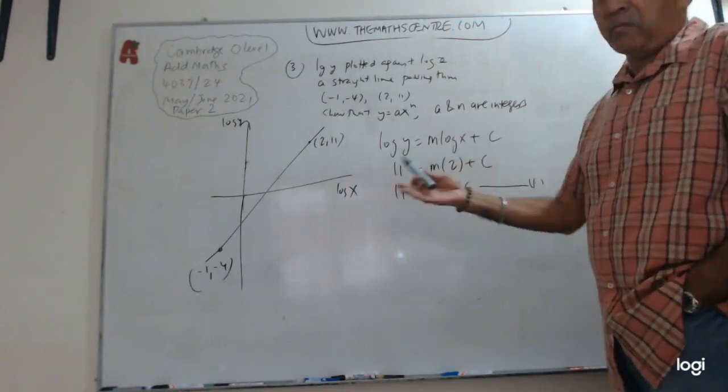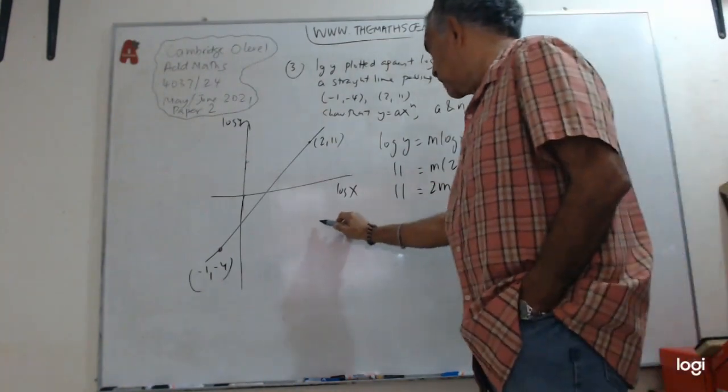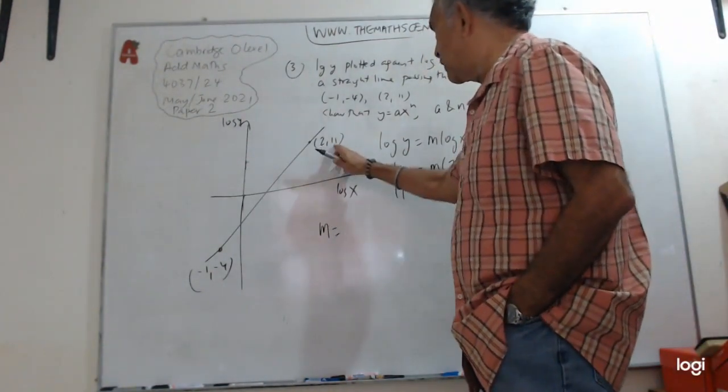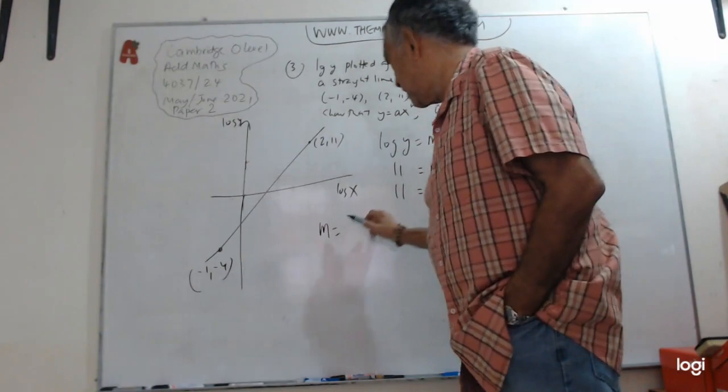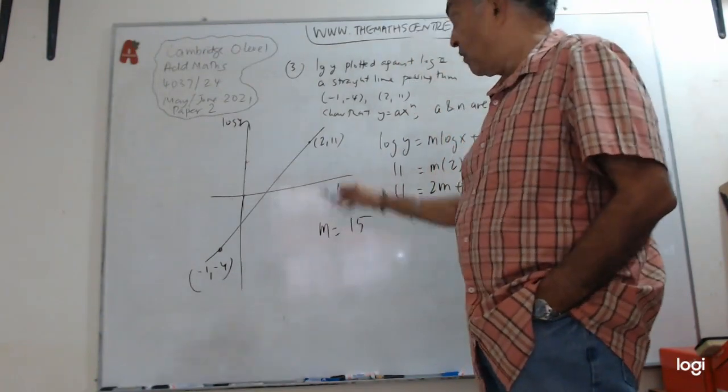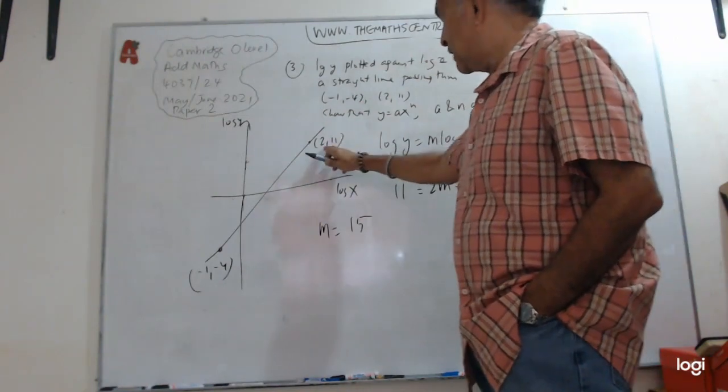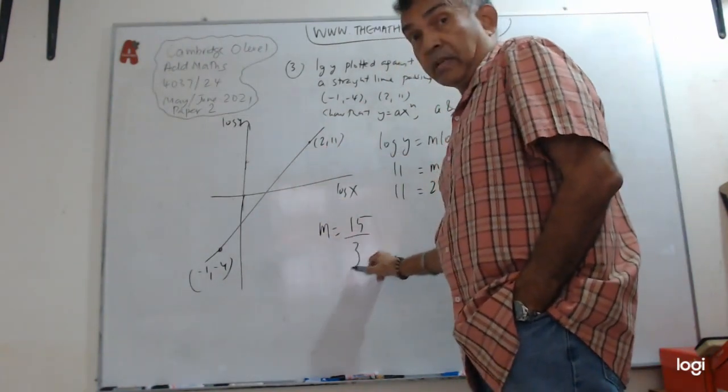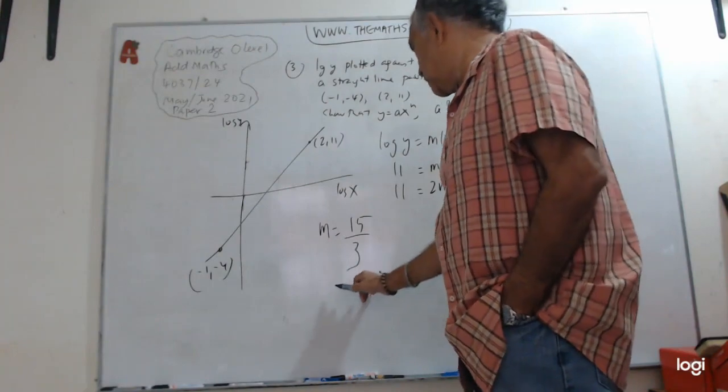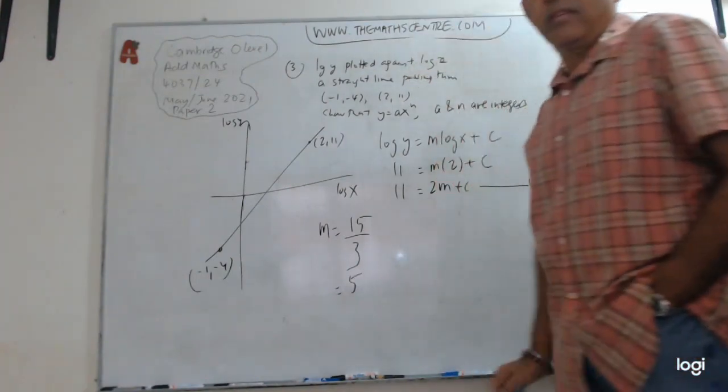Maybe I'll make life a little bit easier for us. Let's go ahead and find the gradient, because you can see the gradient in front of you. So gradient M will be Y2 minus Y1. Y2 minus Y1, which is 15, and X2 minus X1 will be 3. 2 minus minus 1, so this will be 5.